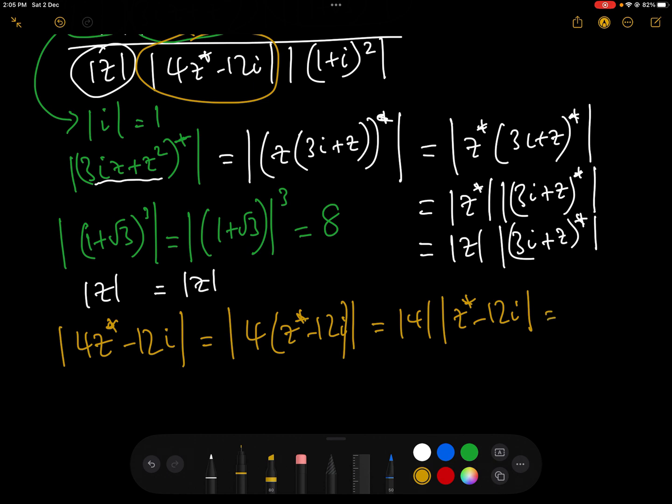And of course, modulus of 4 is 4. Modulus of z conjugate minus 12i. Okay,